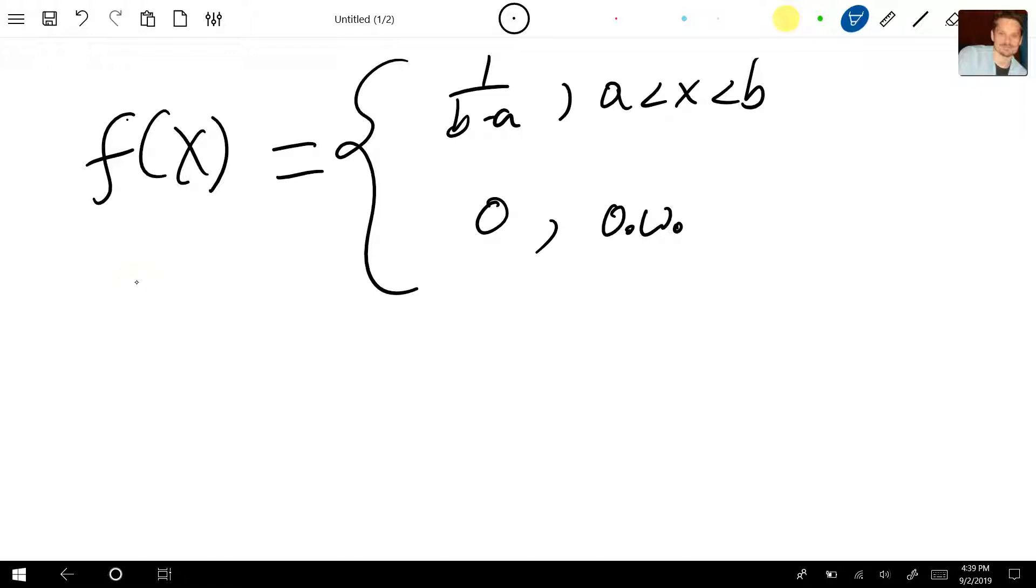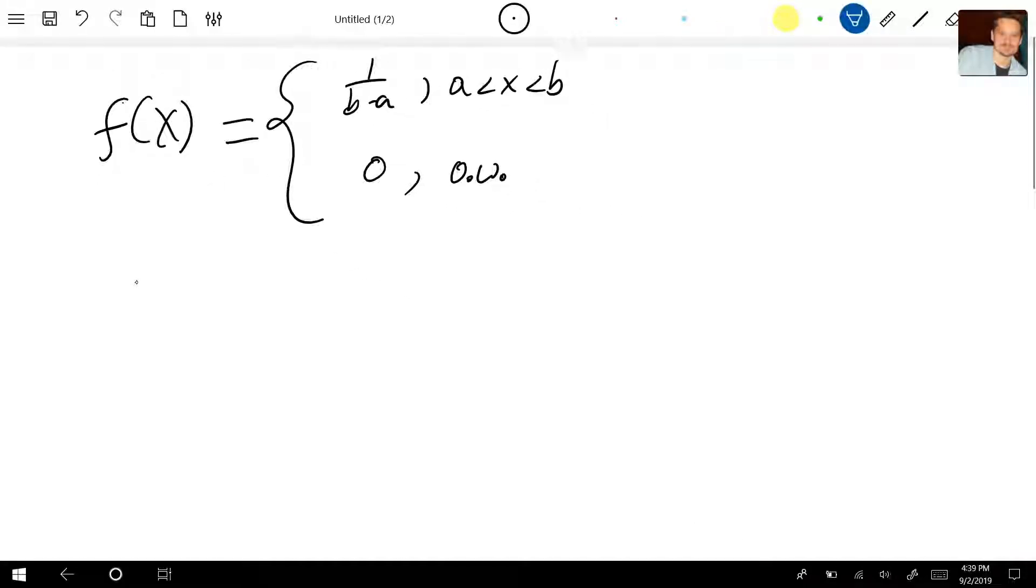So now we're going to find expected value. You basically follow the definition. What is the definition? The definition says you take your probability density function, which is what our f represents, and you multiply by x and then you integrate that over the domain. In this case, from a to b.